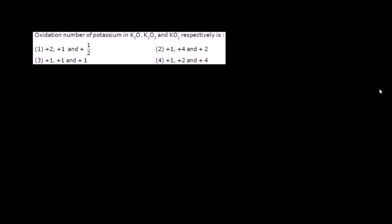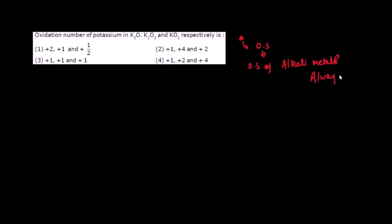The next question asks for the oxidation number of potassium in K₂O, K₂O₂, and KO₂ respectively. This is a very easy question. A universal truth: when an alkali metal is in combined form, it always gives oxidation state +1. So the oxidation state of alkali metals in combined state is always +1. Potassium will always be +1, so the answer is +1, +1, +1 — option three is correct.